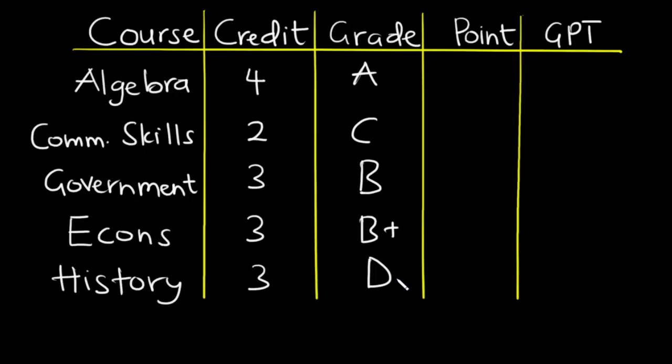To calculate your GPA, you need to know the point system that is used in your school. In most schools, an A is worth four points, a C is worth two points, a B is worth three points, B plus is worth 3.5 points, and a D is worth only one point. F is worth nothing.